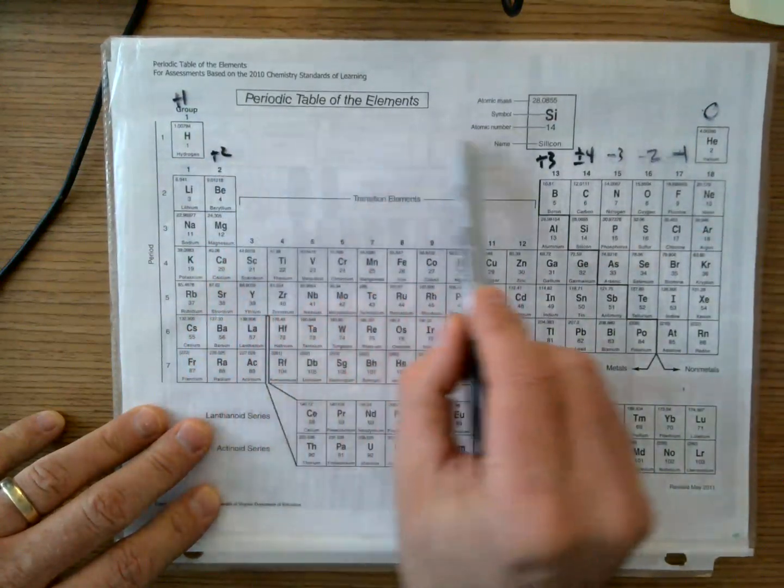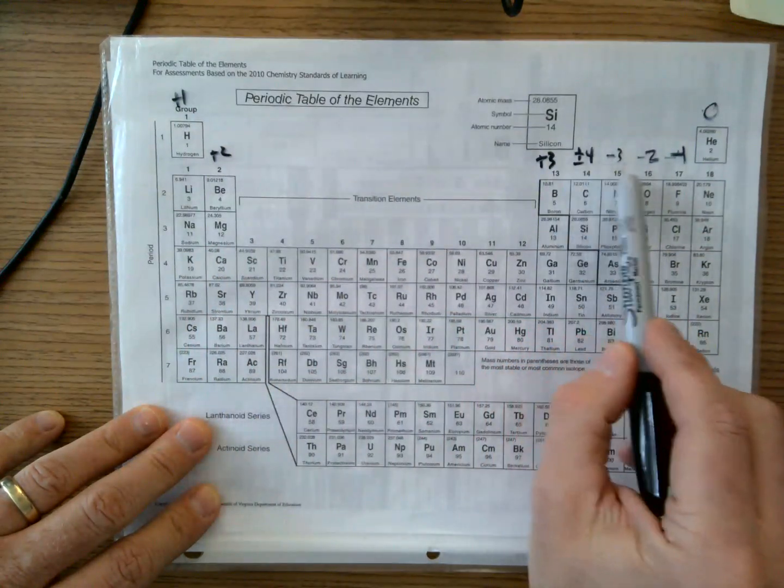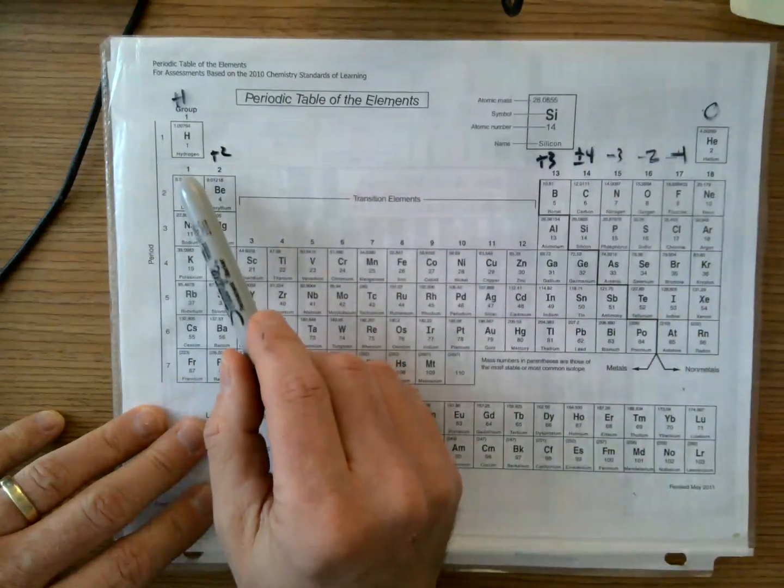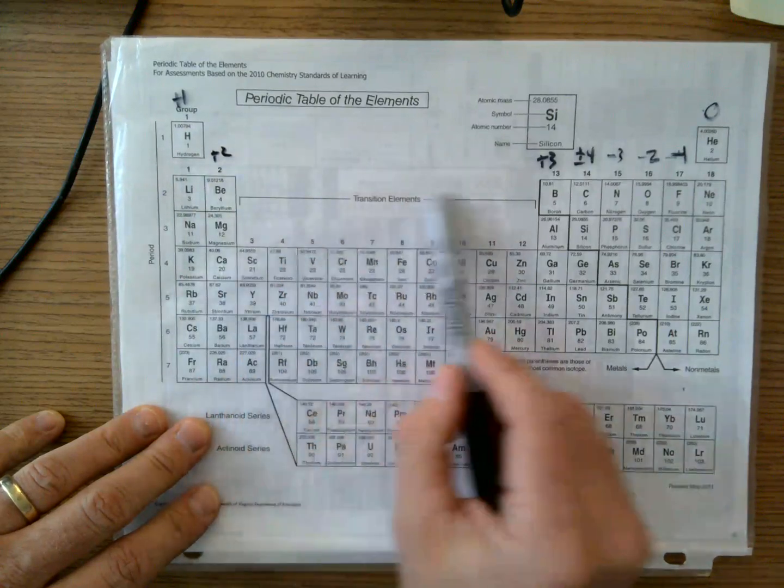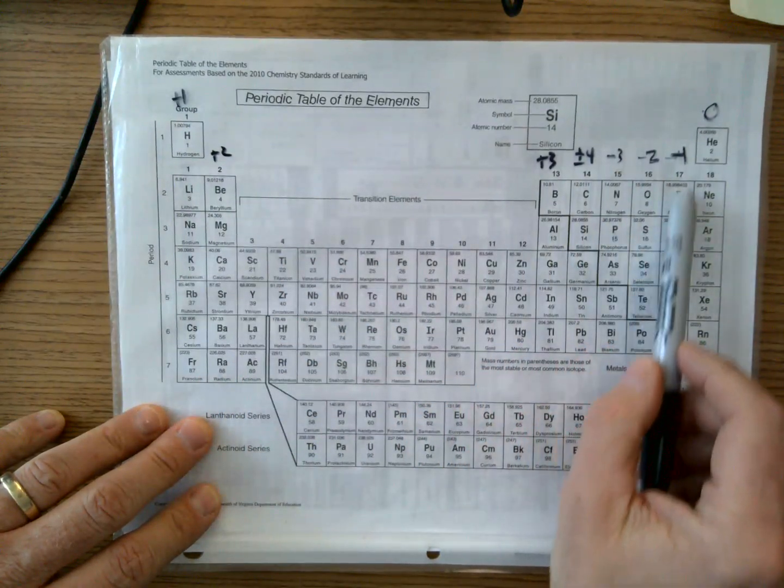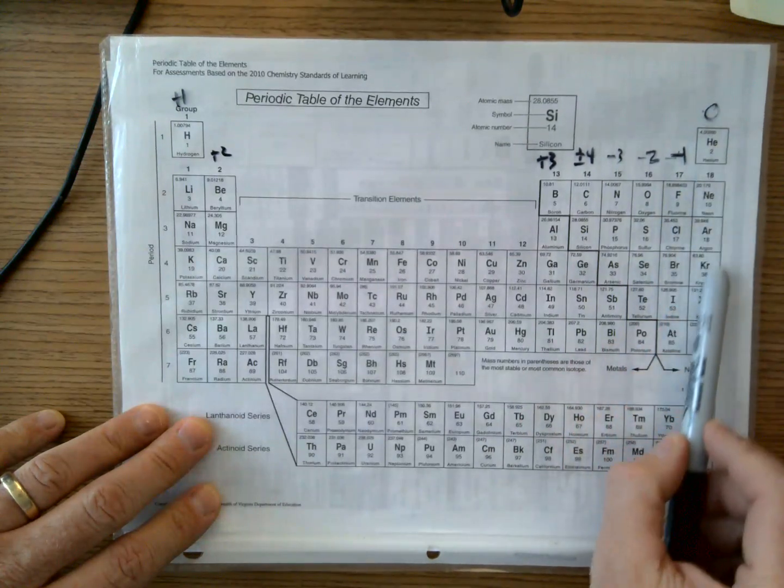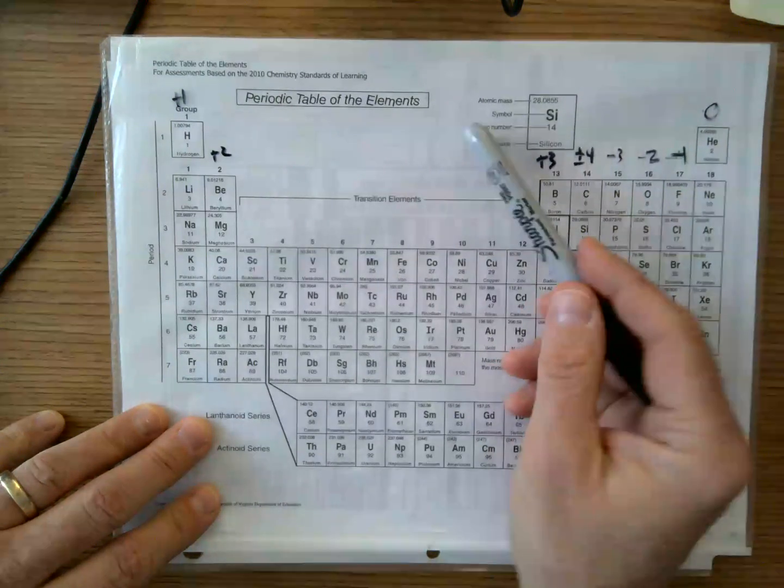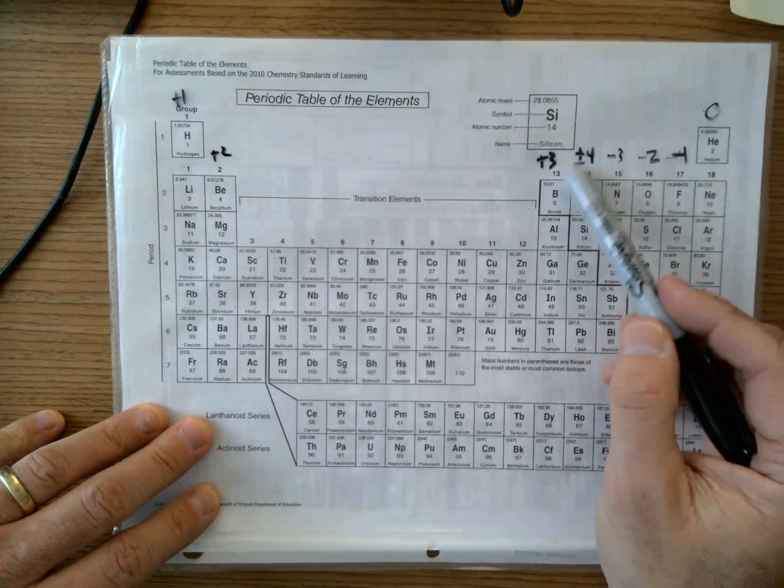These oxidation states, to satisfy the octet rule, this is what the atoms in these groups do. They either lose one, lose two, lose three, gain three, gain two, gain one. Noble gases have a full octet. They don't need to do anything with gaining or losing electrons.